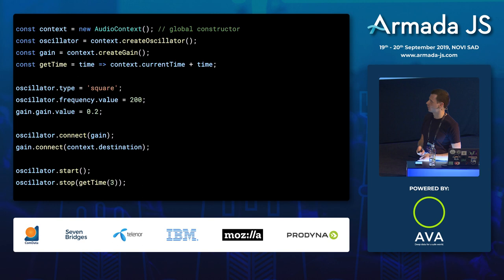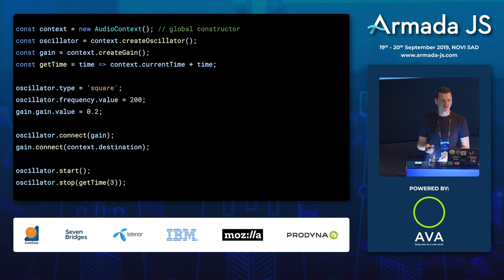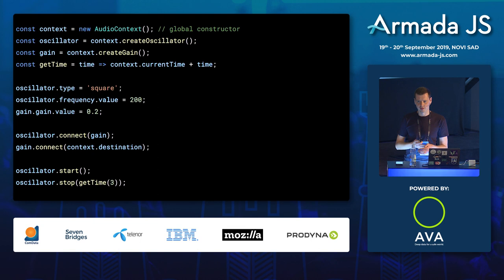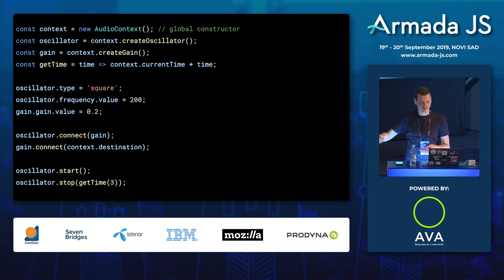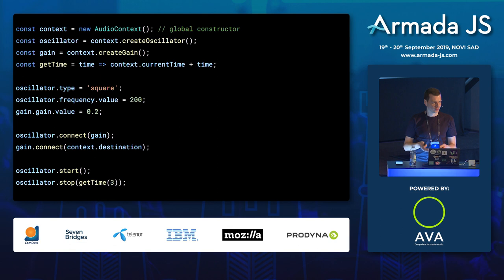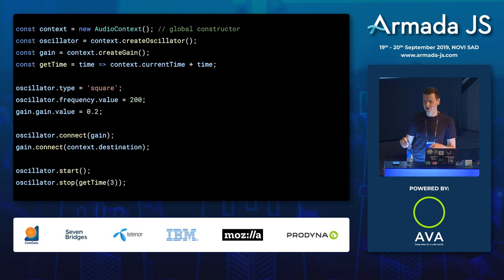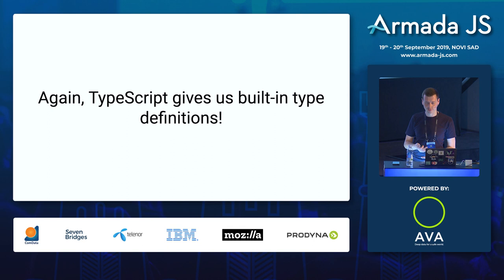Here's a brief Web Audio example. We create an AudioContext instance — a global constructor available in the browser. We create an oscillator, which emits a particular waveform such as a sine or square wave — a constant real-time generated sound. Then we create a gain node to control volume. We set the oscillator to a square wave, set its frequency to 200 hertz, connect the oscillator to the gain node, then connect the gain node to context.destination — usually the user's speakers. We start the oscillator and stop it three seconds later. TypeScript gives us built-in type definitions for this, which is super cool.